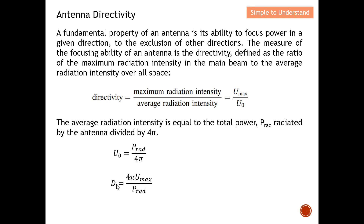To determine directivity, if we keep the radiated power constant — say at a value of one — then the bigger the maximum radiation intensity, the better the directivity. In different directions you get different values of maximum radiation intensity, so the bigger that number, the bigger the antenna directivity.